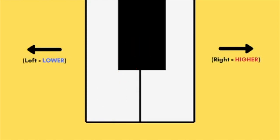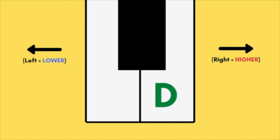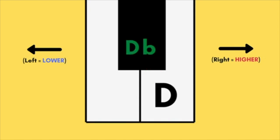And as you can probably guess by now, flats work the opposite way. If this is a D, then D plus a flat makes this note: D flat.